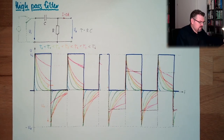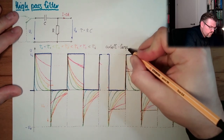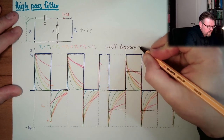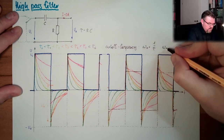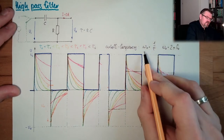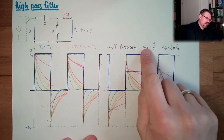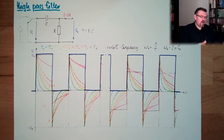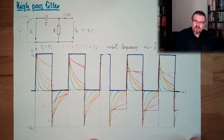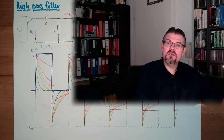The cutoff frequency is the same formula as before: omega zero equals one divided by tau. And omega zero equals two pi times f zero — omega zero is the angular frequency in radians per second, and f zero is frequency in cycles per second. This is what it looks like, and we will have a look at it on the computer.